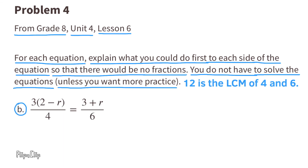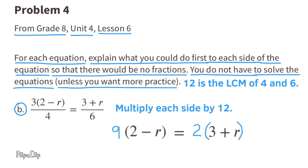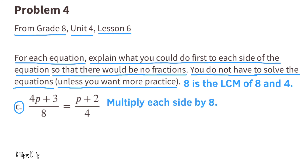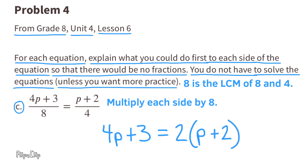Equation B: 12 is the least common multiple of 4 and 6. Multiply each side by 12 to get rid of the fractions. The equation would then read 9 times (2 minus R) equals 2 times (3 plus R). Equation C: 8 is the least common multiple of 8 and 4, so multiply each side by 8. That gives 4P plus 3 equals 2 times (P plus 2).